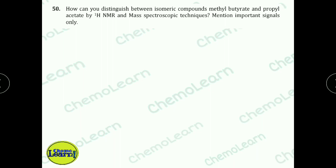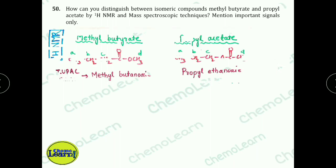Next question: How can you distinguish between the isomeric compounds methyl butyrate and propyl acetate by H1 NMR and mass spectrometric techniques? First, let's look at the structures. Methyl butyrate has 4 types of non-equivalent protons (A, B, C, D) and propyl acetate also has 4 types (A, B, C, D). Looking at NMR patterns: for methyl butyrate, type A has 3 protons, type B has 2 protons giving a triplet, and type C has 2 protons.